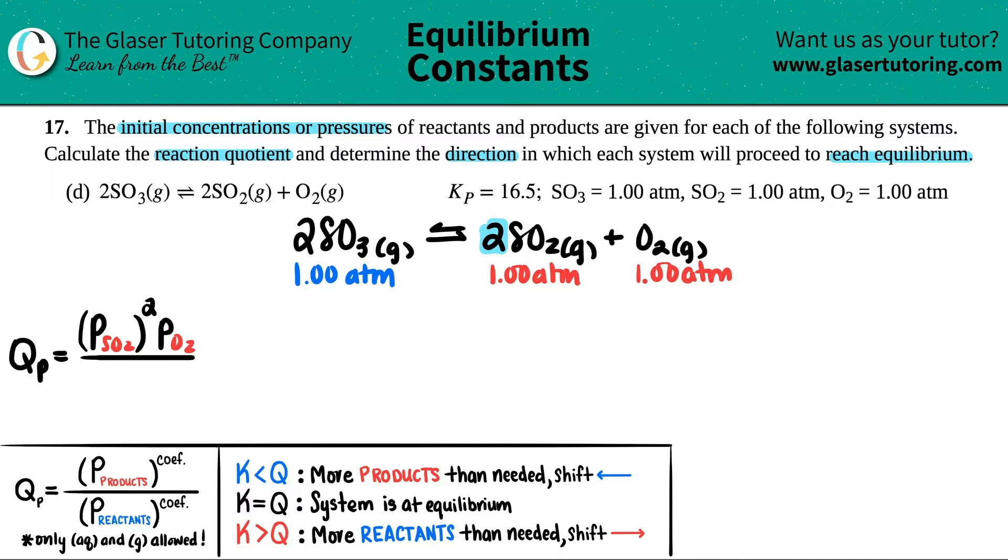And this one I don't have a coefficient—there was no number, so that means there was just one of them. But remember, anything raised to the first is the same number, so I don't have to really write that. Now let's just work on the denominator, the reactants. So it'd be the pressure of SO₃. And now there is a coefficient—there's two of them—so I have to box this off and put a two. Beautiful formula.